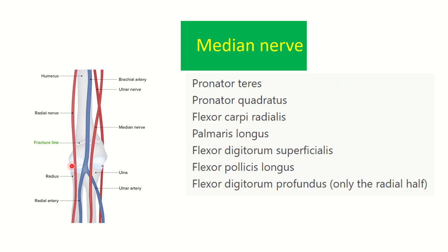Here we can see another picture showing the supracondylar region and the fracture. In the posterior view, we can see the median nerve passing through the supracondylar region. It is very common to have injury of the median nerve as it passes through this region. The brachial artery may also be compressed as it enters between the two fracture fragments.